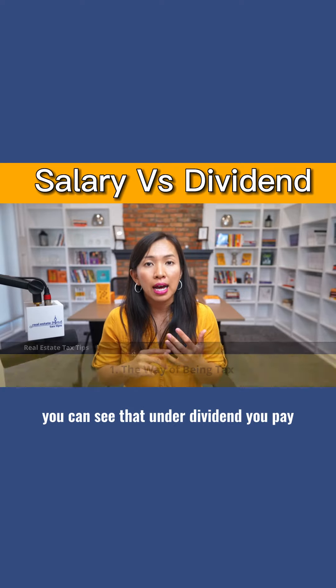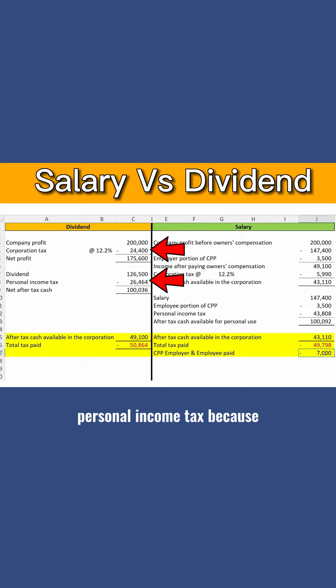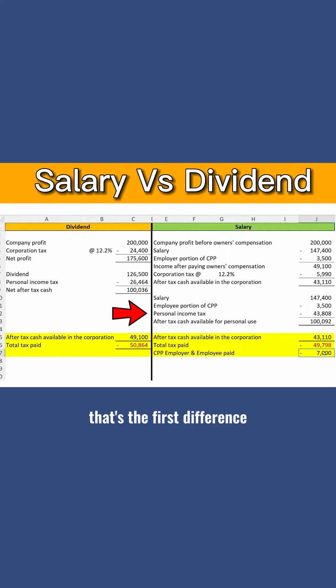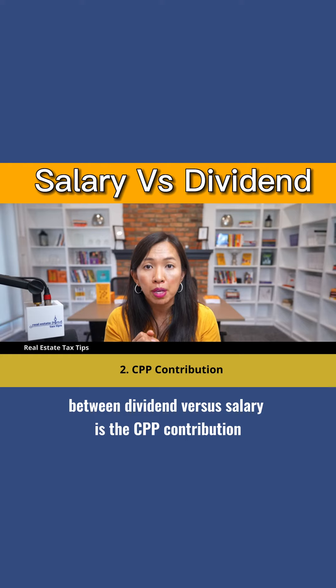Dividend and salary — the first difference is how each is taxed. Under dividend, you pay both corporation tax and a lesser amount in personal income tax, because the Canadian tax system is designed to account for the extra tax already paid inside the corporation. With salary, the corporation pays no income tax on that amount, but you pay personal income tax on the entire salary amount.